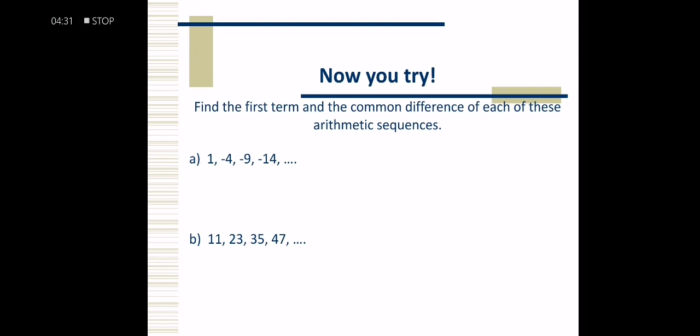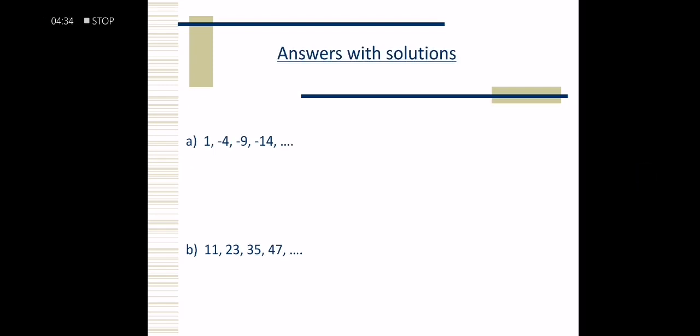Did you get the answer? Let us now try to answer it. The first sequence is 1, negative 4, negative 9, and negative 40. Our first term a is 1. Our common difference is a sub 2 minus a sub 1, which is negative 4 minus 1, which equals negative 5.